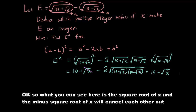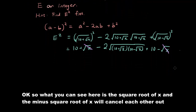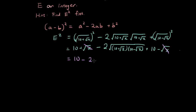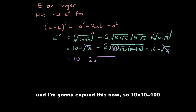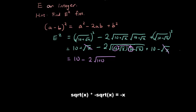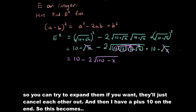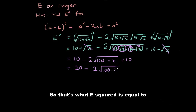The √x and −√x cancel each other out, so we're left with 10 − 2 times the bracket. Expanding inside: 10 × 10 is 100, √x × √x is negative x because of the minus sign. The other expansion terms cancel out, and we have a plus 10 on the end. So this becomes 20 − 2√(100 − x).